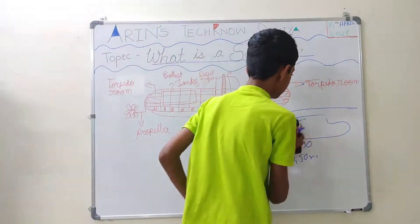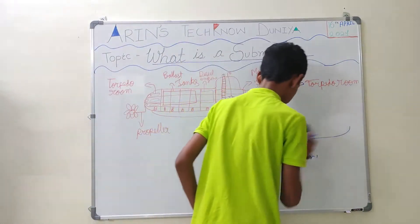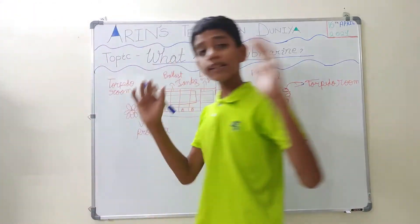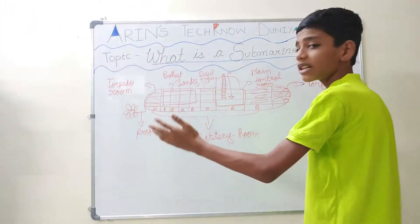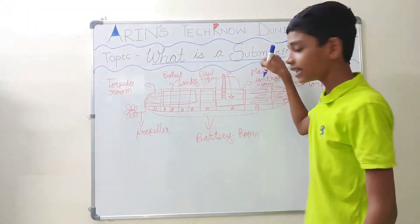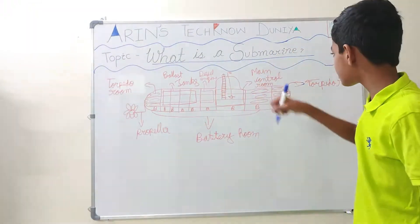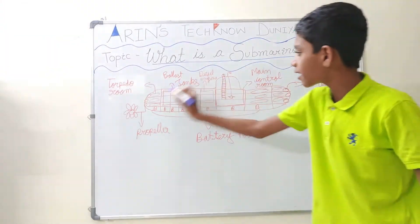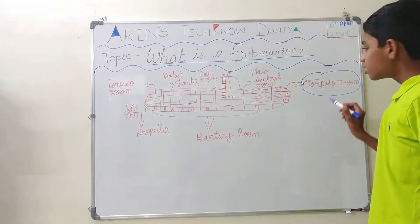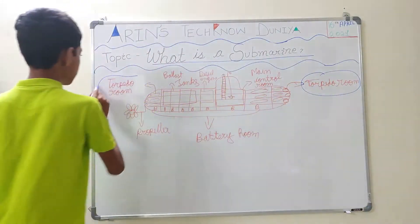A submarine is very small in size. It is almost 83 to 93 meters in length, and it is around 15 to 20 meters in width. In a submarine you can see there are many compartments. First, comes the torpedo room. You can see there are torpedo rooms on both sides.